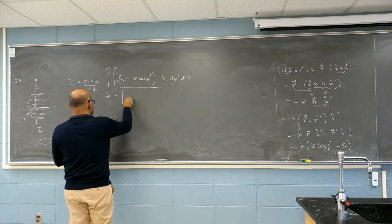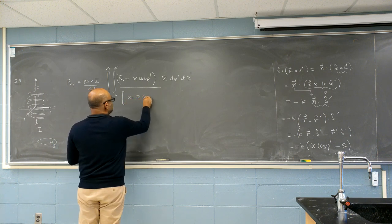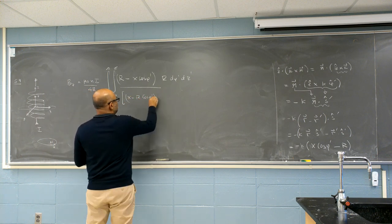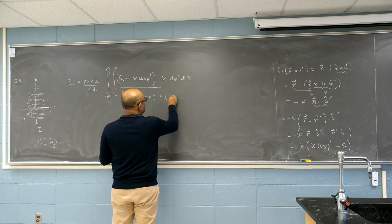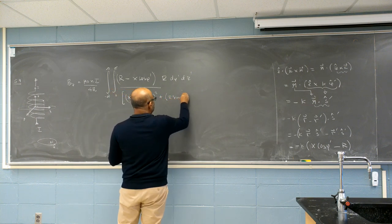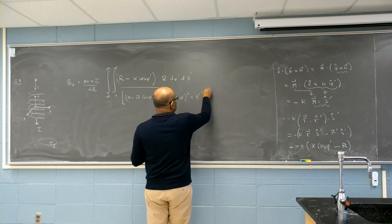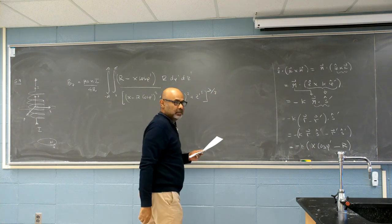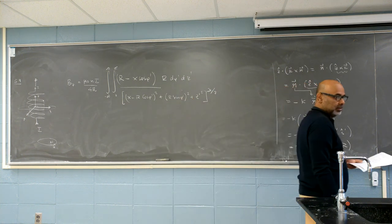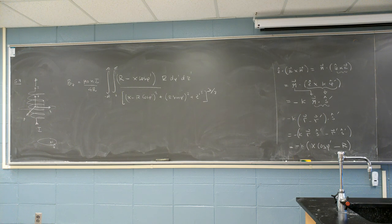And X minus R cosine phi prime squared. Plus R sin phi prime squared. Z prime squared. To three halves. It's that distance squared to the three halves. There's only x coordinate for R. There's no y and z coordinate. It's one over R cubed. So that's why the three halves.